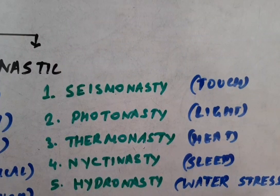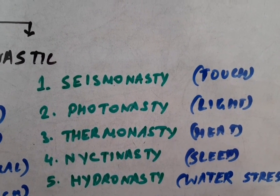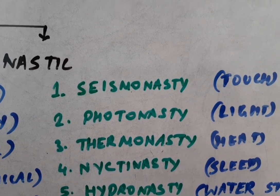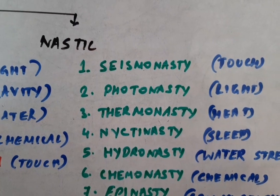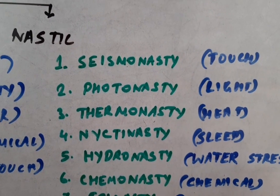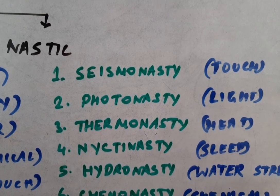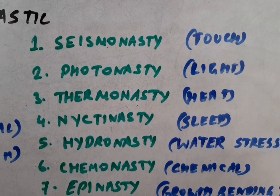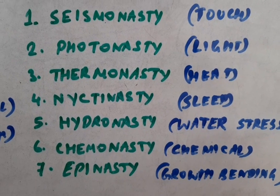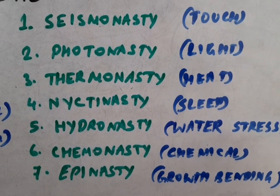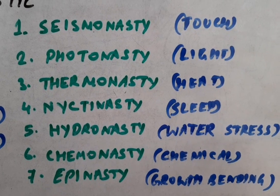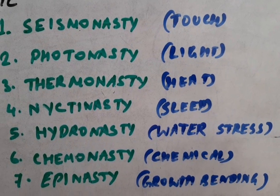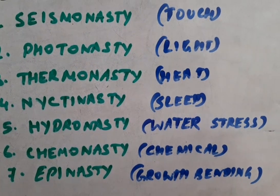Nastic movements are non-directional and growth-independent — this is the basic difference from tropic movements. There are about seven types: seismonasty (response to touch), photonasty (response to light), thermonasty (response to heat/temperature), nictonasty (sleep movements), hydronasty (folding of grass in response to drought/water stress), chemonasty (response to a chemical), and epinasty (bending movement due to growth).